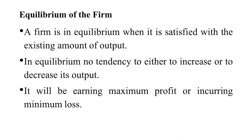Now we will discuss the equilibrium of the firm. A firm is in equilibrium when it is satisfied with the existing amount of output — meaning there is no tendency either to increase or decrease the output. They have no desire to change the existing scenario of their production. It will be earning maximum profit or incurring minimum loss. When a firm has no tendency to change its output, it is in equilibrium.